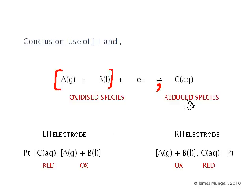So if we wanted to write this as a left hand electrode, we'd want the reduced side, then the oxidized side, that's the C first, then comma, and then the A and the B, other way round if you wanted this as the right hand electrode.